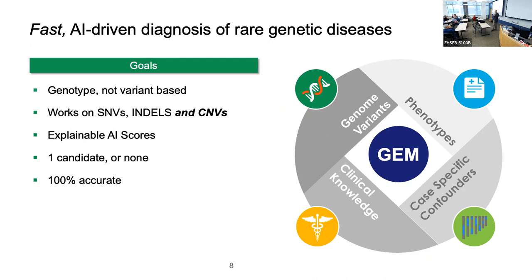Another key issue is AI explainability. Many AI systems have a black-box aspect — they give the right answer but you don't know why. For these technologies to go mainstream, AI must be explainable. Finally, we set the bar extremely high: given a genome and accessory data, GEM should identify only one candidate — always the correct one — or definitively state there is no evidence of genetic disease, and never make a mistake.